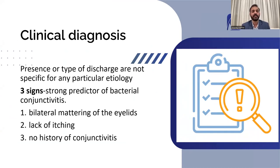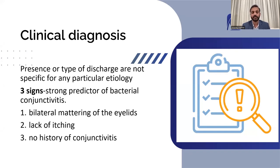The three signs are: first, bilateral mattering of the eyelids — when the patient wakes up in the morning, his eyelids are sticky and matted together and he finds it difficult to open the eyes; second, lack of itching, which is very important because itching is the hallmark of allergic and viral conjunctivitis; and third, no history of previous conjunctivitis. If all three are present, your case is most likely bacterial.